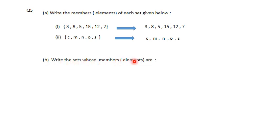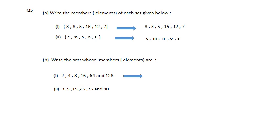Part B: Write the set whose members are given. This is the reverse - members are given and we write the set. We enclose all elements in curly brackets separated by commas. I hope you have understood how to write a set, how to write members from a given set, and how to write a set from given members.